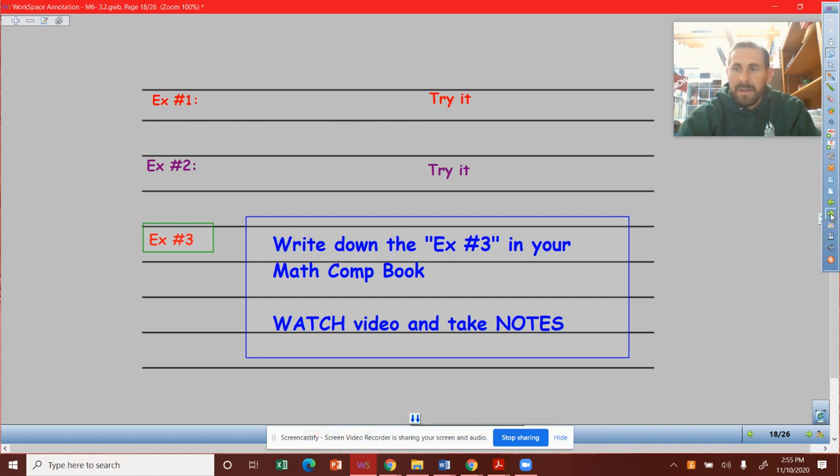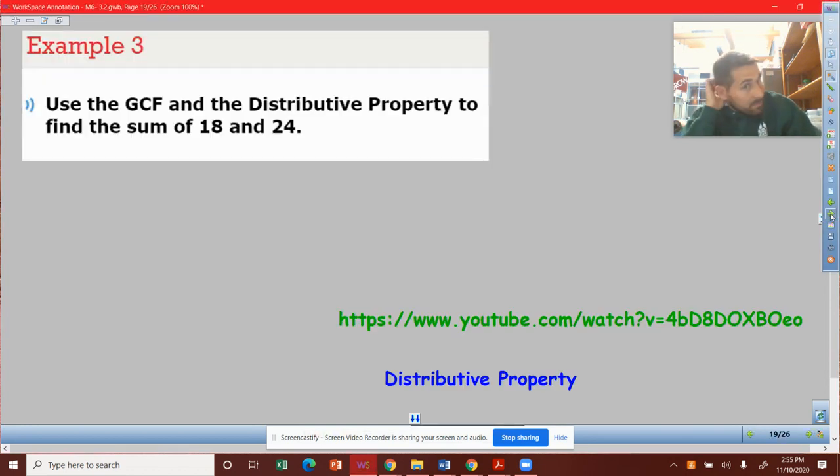Alright, we're looking at Example 3 today. We did Example 1 and Example 2 yesterday. Here's Example 3: Use the GCF and the distributive property to find the sum of 18 and 24.